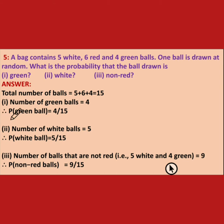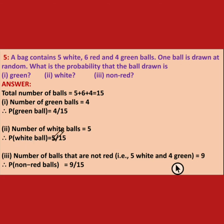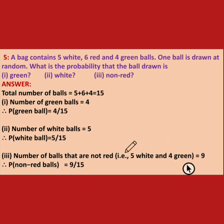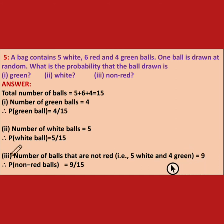Number of white balls is 5, so probability of getting a white ball is 5 upon 15. For non-red, that means white balls and green balls — 5 white plus 4 green gives 9 non-red balls. So probability for non-red balls is 9 upon 15.